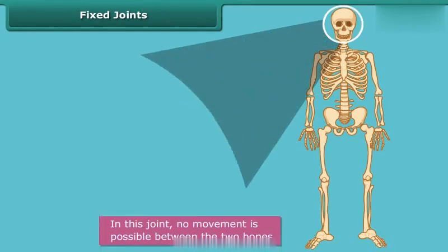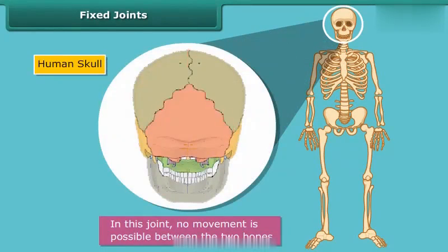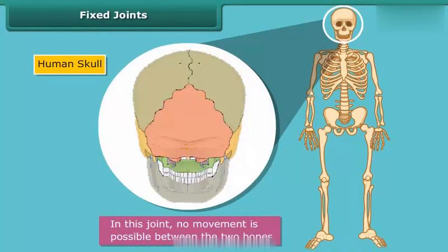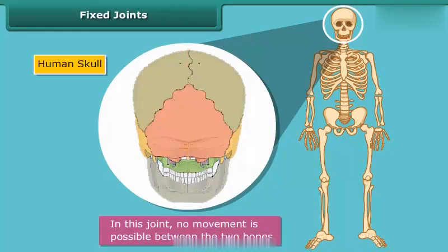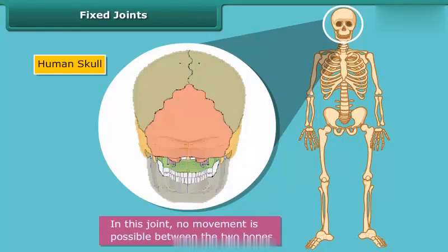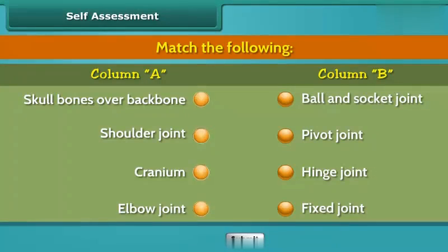In a fixed joint, no movement is possible between the two bones. The sutures between the bones of the skull are an example of a fixed joint.